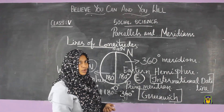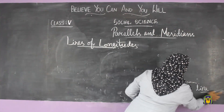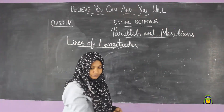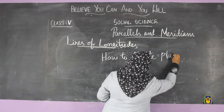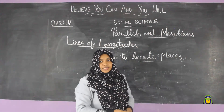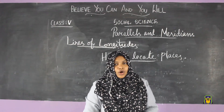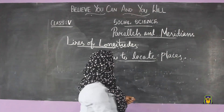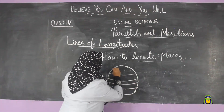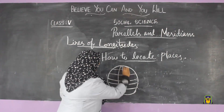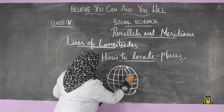Now we can check how to locate places on a globe. The lines of latitudes and the lines of longitudes cut each other at right angles and form a network on the globe called a grid. The lines that run east to west are latitudes, and the lines that run north to south are longitudes. Together they cut each other and form a network called a grid.